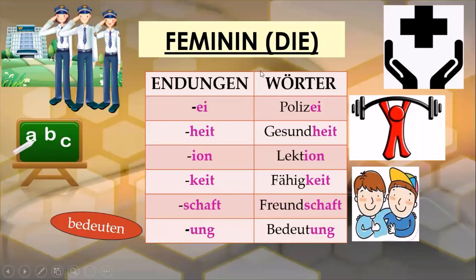The first ending is '-ie'. For example, 'die Polizei' means the police in general — not the male or female officers, but the general term for the police.